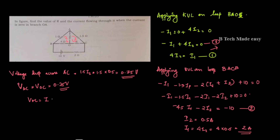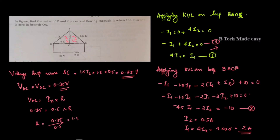The current i2 into R gives the voltage drop. i2 into R is 0.75, and i2 is 0.5 ampere. So R is equal to 0.75 divided by 0.5, and R is equal to 1.5 ohm.